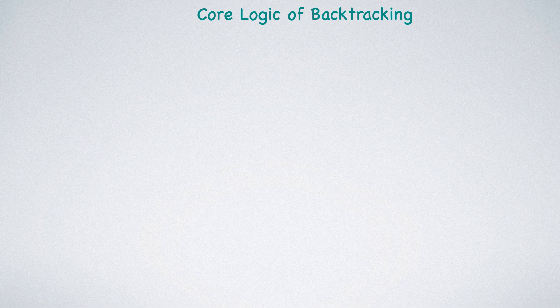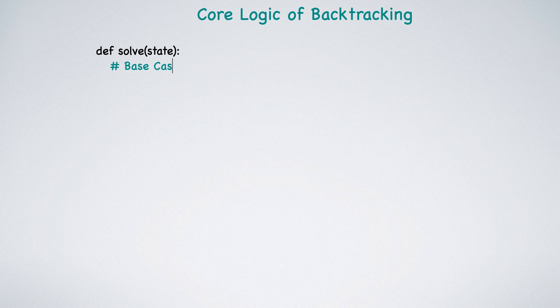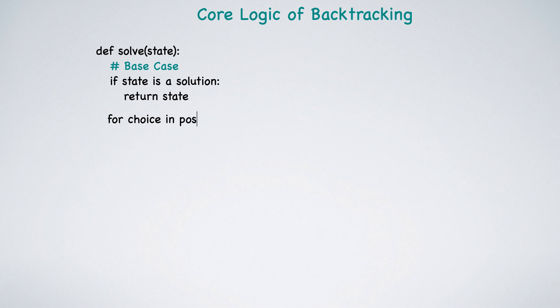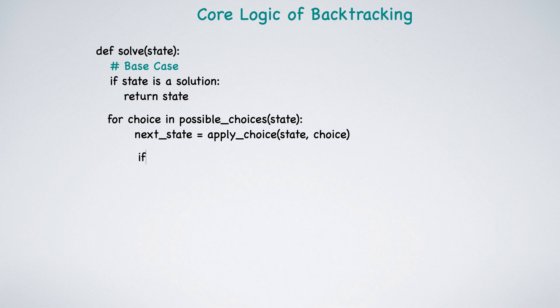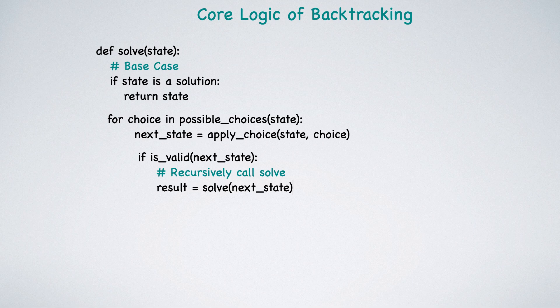Most backtracking problems follow this core logic or template. The function takes the current state of the problem. If the state is a valid solution, return it. Next, we iterate through possible choices for the current state. We then apply a choice to get the next state. If the next state is valid, recursively call solve. If the recursive call returns a solution, return it upwards. If no solution is found, return null to signal backtracking.